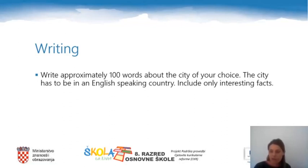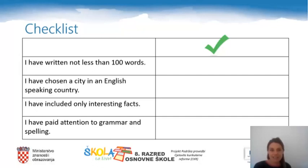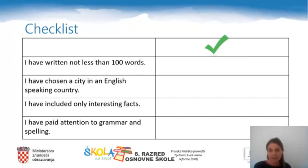While writing, be quite careful about your spelling and the use of grammar structures. There is also a checklist that can help you while writing. Once you finish your text, go back to the checklist and assess how well you did. The checklist says: I have written not less than 100 words; I have chosen a city in an English-speaking country; I have included only interesting facts; and I have paid attention to grammar and spelling — meaning your spelling and grammar structures are mostly correct. Good luck with your homework. See you next time. Goodbye.